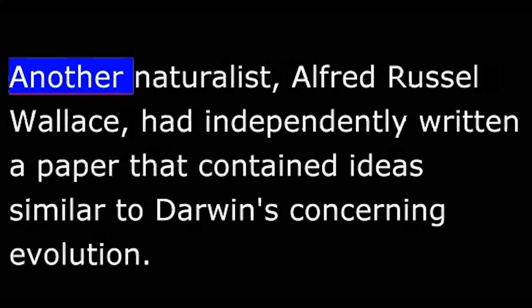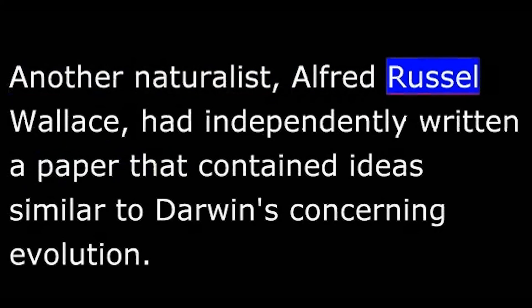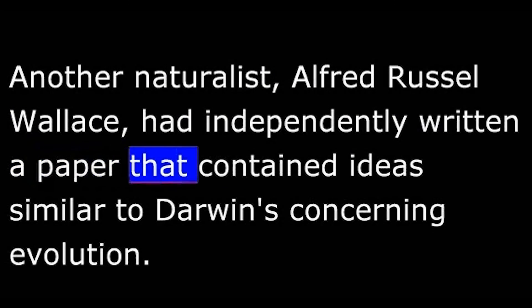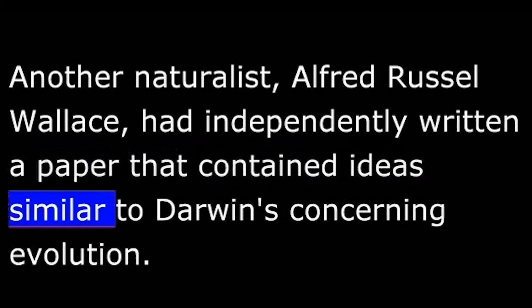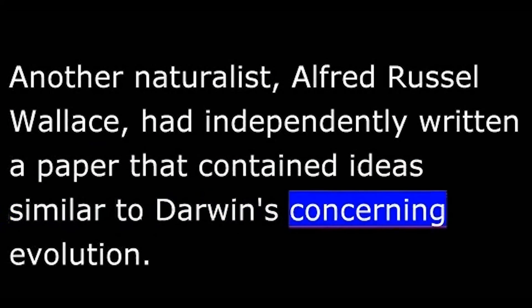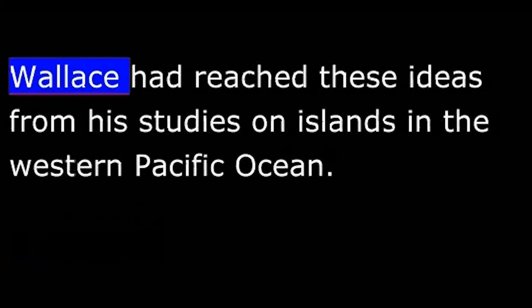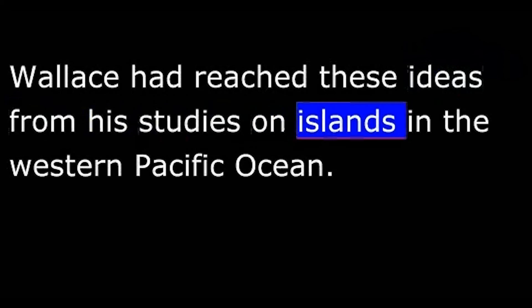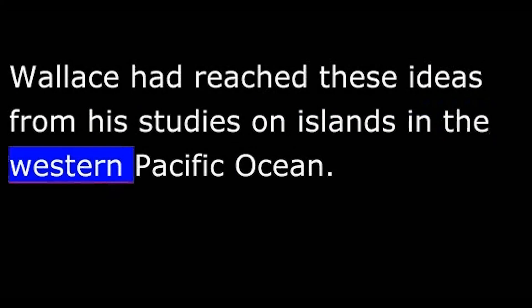It was not until 1858 that Darwin was forced to release his theory to the public. Another naturalist, Alfred Russel Wallace, had independently written a paper that contained ideas similar to Darwin's concerning evolution. Wallace had reached these ideas from his studies on islands in the western Pacific Ocean.